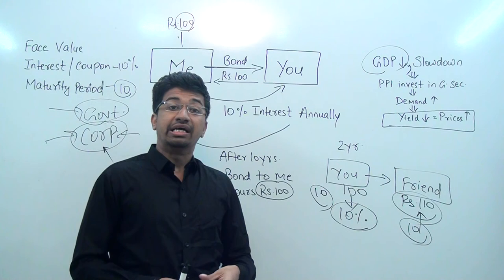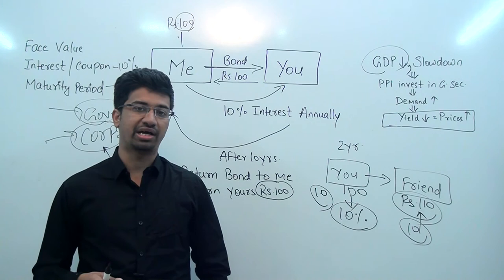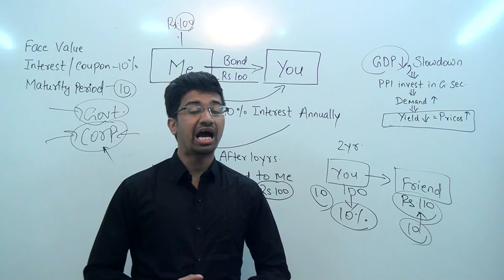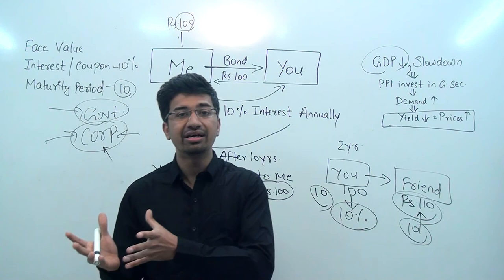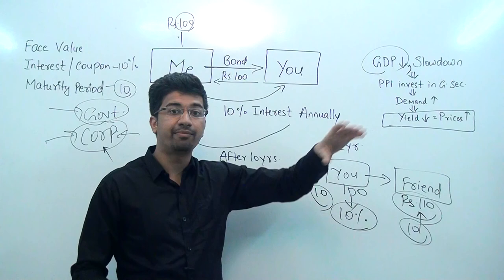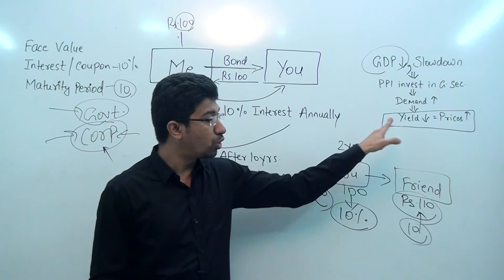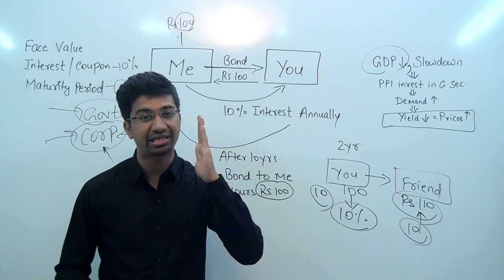अब यहाँ पे relation establish हो गया: bond के prices बढ़े, demand बढ़ी, और yield कम हो गई। यह topic इसलिए important है क्योंकि हाल ही में government ने Operation Twist निकाला — short term bonds और long term bonds को एक साथ खरीदना और बेचना। इसको हम अगले lecture में cover करेंगे। Comment box में बताइए: अगर economy में boom हो तो bond yield ज़्यादा होगी या कम? Keep shining, have a good day, thank you and stay tuned!